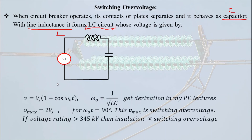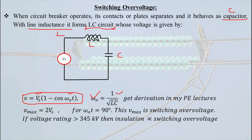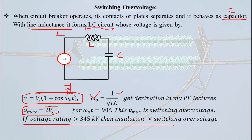The expression of voltage for this LC circuit is V = Vs(1 − cos ω₀t), where ω₀ = 1/√(LC). This expression has been covered in my previous power electronics lectures, where you can find the full derivation. The maximum value of voltage from this expression is 2Vs, which occurs when cos ω₀t equals minus one. This maximum voltage of 2Vs is responsible for switching over voltage. For transmission lines above 345 kV, the insulation level is decided by switching over voltage.